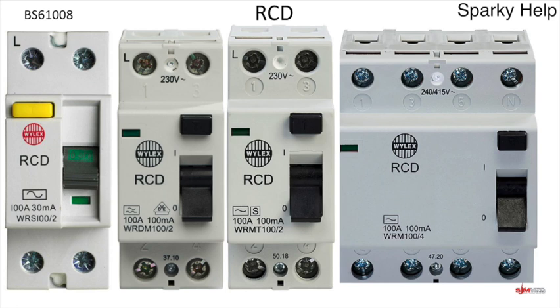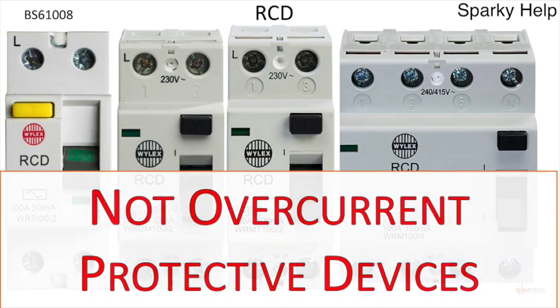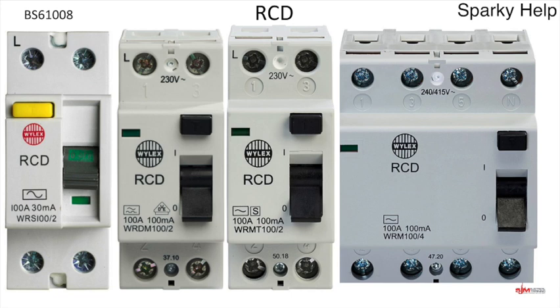Or you could have a four-pole RCD — AC type, 100A, 100mA — so this would be a three-phase and neutral RCD. All of these could be your main switch as shown on the electrical installation certificate. Remember, these are not overcurrent protective devices; they only pick up earth faults or imbalances between the live conductors. These will not disconnect under short circuit or overload situations.